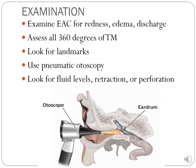Examine the external auditory canal for redness, edema, and discharge. Your goal is to assess 360 degrees of the tympanic membrane — the key is straightening the canal. Look for landmarks, use the pneumatoscope to check for mobility, and look for fluid levels, retraction, or perforation. Think of holding a flashlight at the door of a dark room: you don't need to push the flashlight deep in — just stand at the door and move your light around to see all of it.